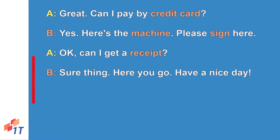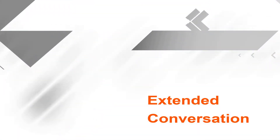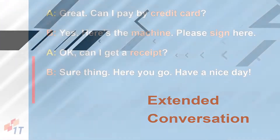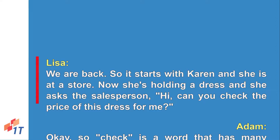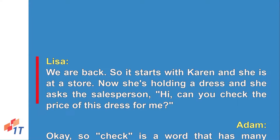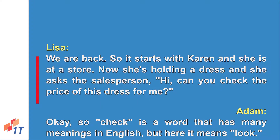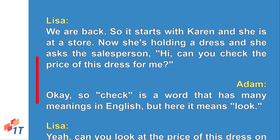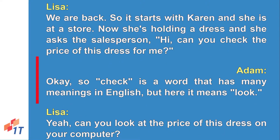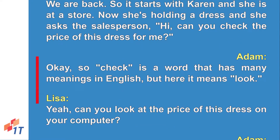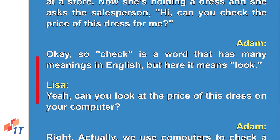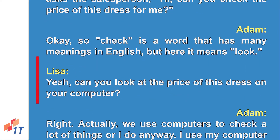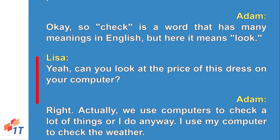We are back. The dialogue starts with Karen — she is at a store, holding a dress, and she asks the salesperson: 'Hi, can you check the price of this dress for me?' So 'check' is a word that has many meanings in English, but here it means 'look.'